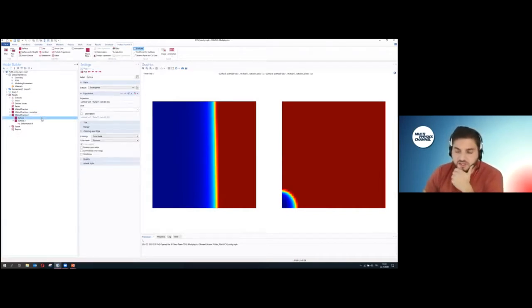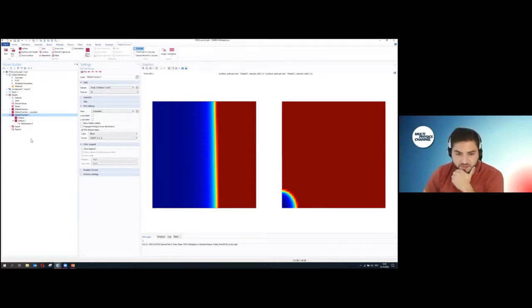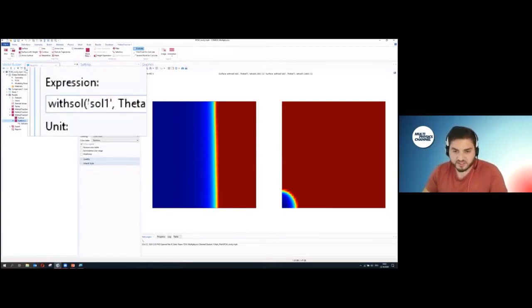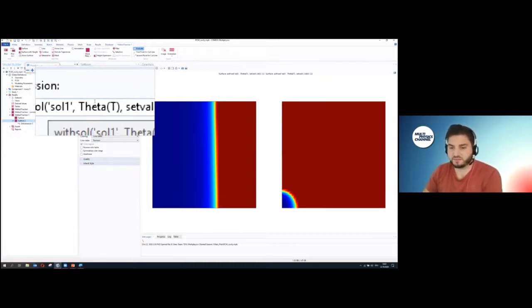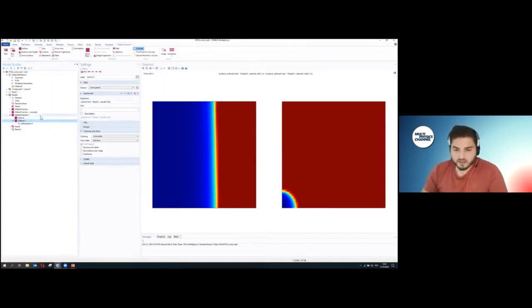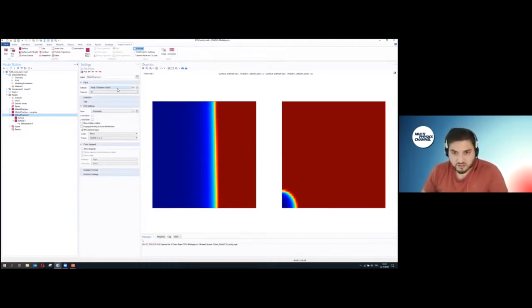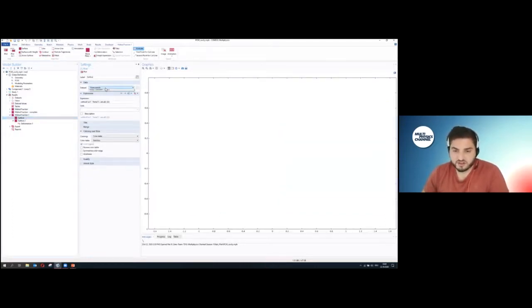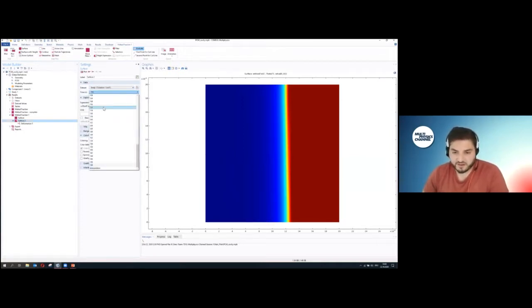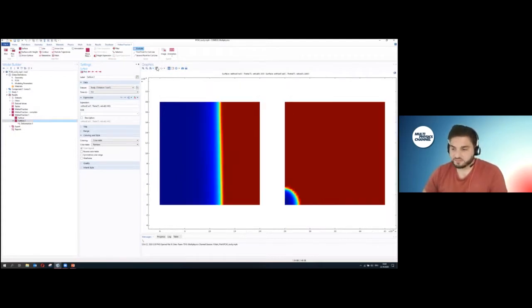One way could be to set this data set to none and then change here to solution one and allocate for every surface a different time. That would also work. But you see even if I keep clicking around, it remains fixed. This is a really nice feature when you want to have a graphic or a visual window that never changes.